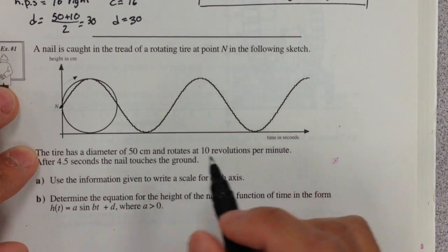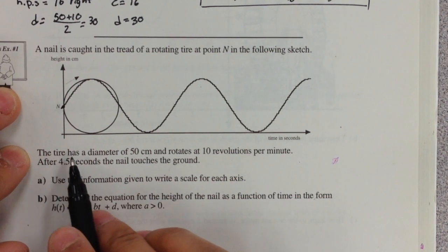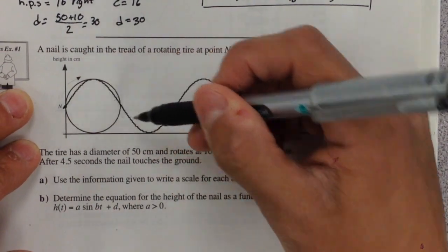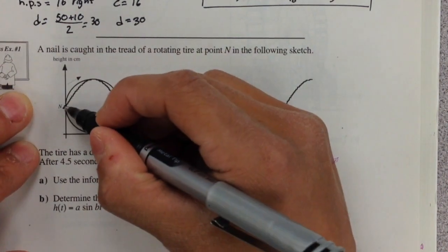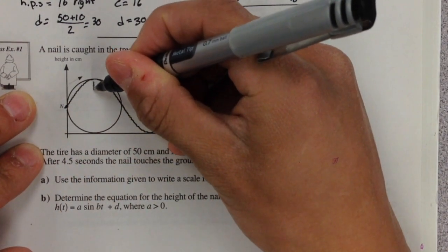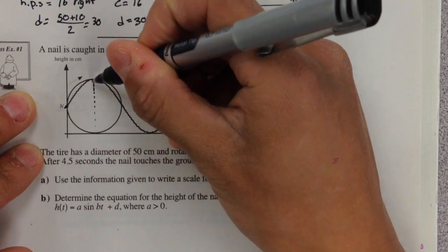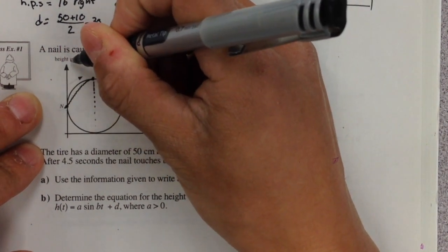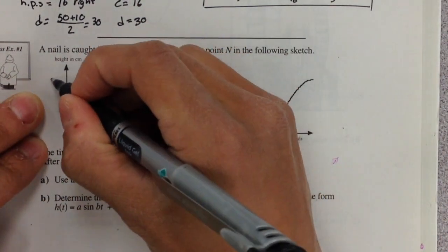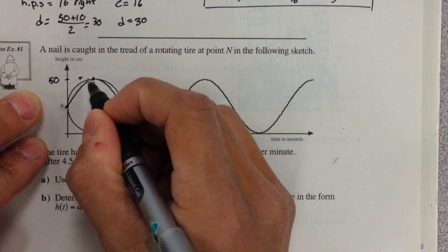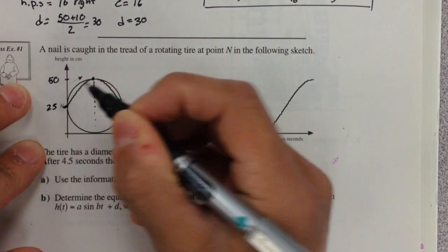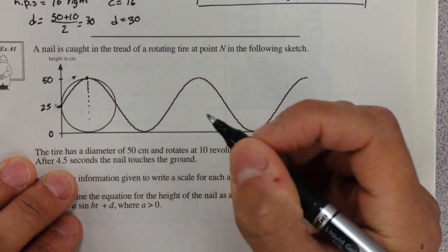We're going to use the information given to write a scale for each axis. If we have a diameter of 50, then we know that this top point, if this is the height in centimeters, my y-axis is the height in centimeters. My x-axis is the time in seconds. This highest point must be at 50, which means the midpoint here must be at 25 centimeters. And we'll be at zero if it's on the ground.